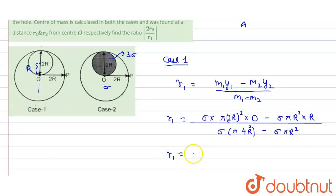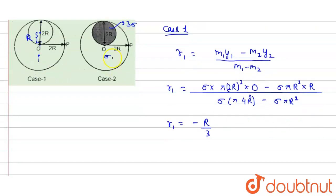Solving this, r1 turns out to be −r/3. The negative sign indicates that r1 lies on the negative y-axis.